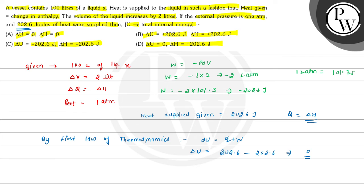And the value of ΔH equals the value of Q, so ΔH = +202.6 joules. Change in internal energy is 0 and change in enthalpy is +202.6 joules. Therefore, option D is the correct choice for this question. Hope you understood it well. All the best and thank you.